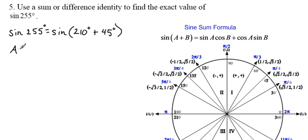The letter A in the sum formula is going to represent the first angle, and our first angle is 210 degrees. The letter B will represent our second angle, and our second angle is 45 degrees.